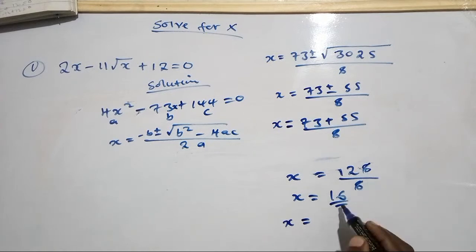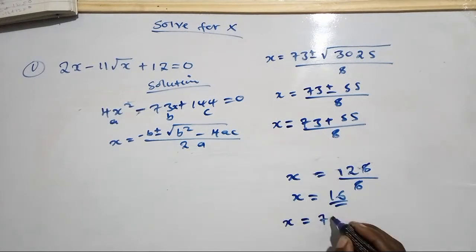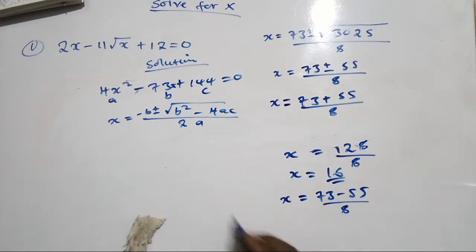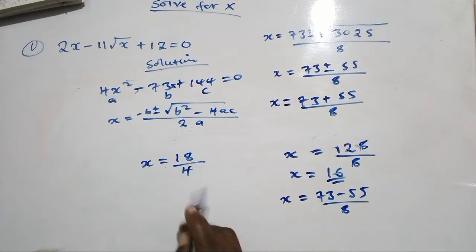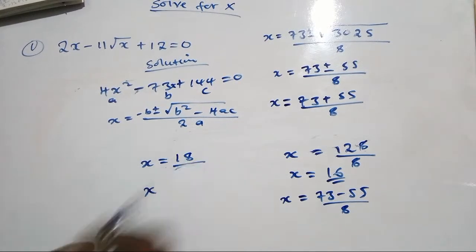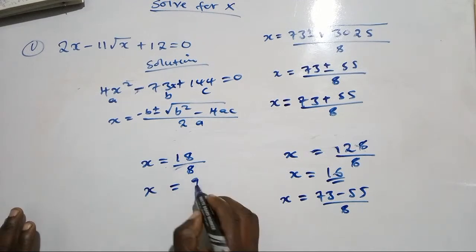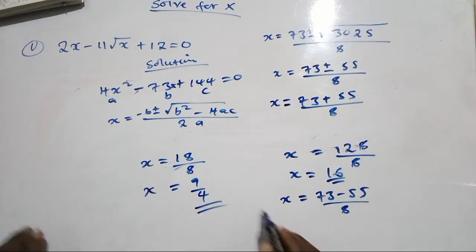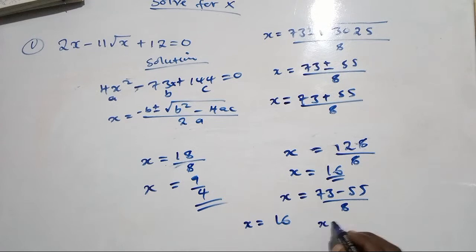8 into 128 is 16. Now following the negative sign: x equals 73 minus 55 divided by 8. That gives 18 over 8. Reducing to lowest terms: 2 into 18 is 9, and 2 into 8 is 4. So the second value is x equals 9 over 4.